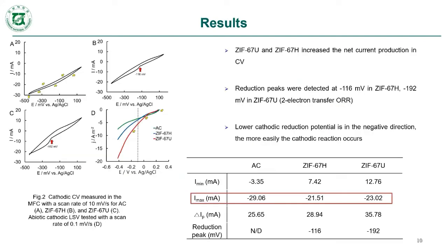In Figure 2, cathode cyclic voltammetry (CV) data is shown with a scan rate of 10 mV per second from panels A to C, and panel D shows the abiotic LSV plot for all cathodes. From the results, ZIF-67U and ZIF-67H produced high net current in CV, while the reduction peak was detected at minus 116 mV in ZIF-67H and at minus 192 mV in ZIF-67U.